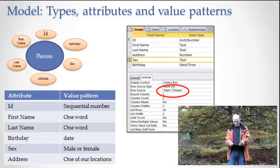Okay, so, our models specify types, attributes, and value patterns. Databases specify types, attributes, and value patterns.